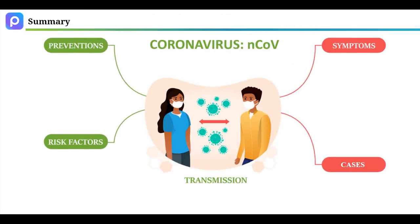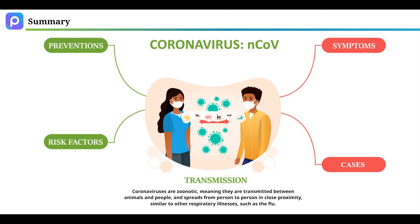In summary, coronaviruses are zoonotic, meaning they are transmitted between animals and people and spread from person to person in close proximity, similar to other respiratory illnesses such as the flu.